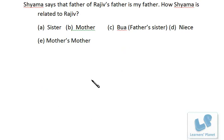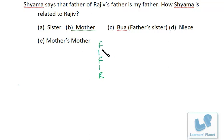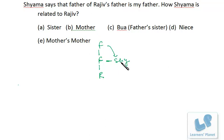Next: Shama says, 'The father of Rajiv's father is my father.' Rajiv's father's father is one generation above Rajiv's father. Shama says that person is her father, meaning Shama and Rajiv's father are siblings — in the same generation. So Rajiv is Shama's nephew, and Shama is Rajiv's father's sister — his bua.